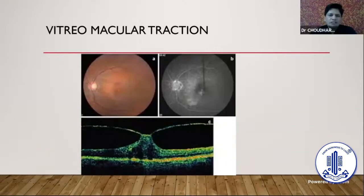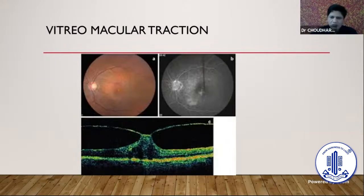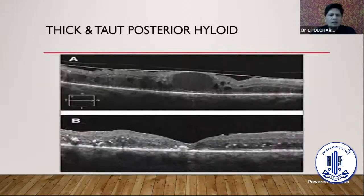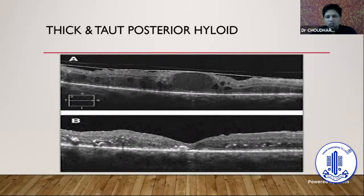Vitreomacular traction is another entity — it is hardly detectable on fundus photograph or FFA, but on OCT you can clearly see significant vitreomacular traction which will not let the edema resolve. This is a clear-cut case for vitreoretinal surgery. Similarly, a thickened taut posterior hyaloid, if present, will make all efforts of intravitreal injections useless, and the patient ultimately needs to be referred for VR surgery for its removal.